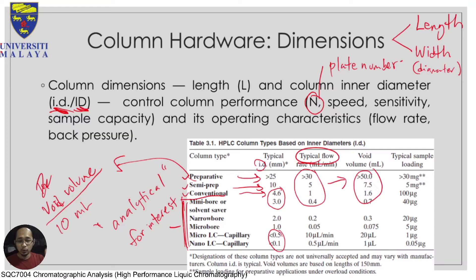In terms of flow rate and void volume — you want to always have a flow rate that is higher than your void volume. In my case I normally want a flow rate equal to or greater than the void volume so that the time span for my separation is not too long. But again it depends on your system's capabilities.